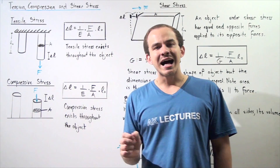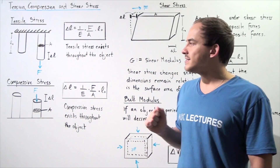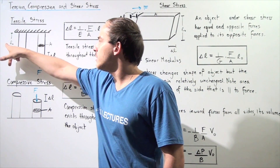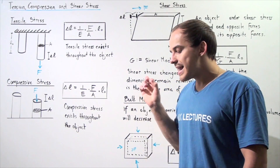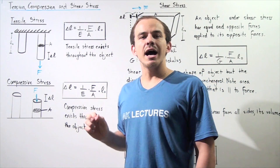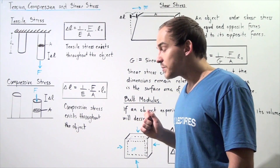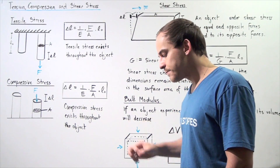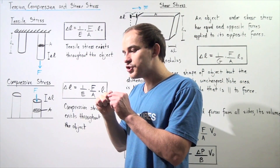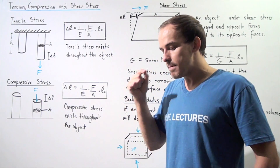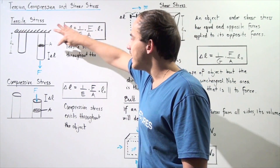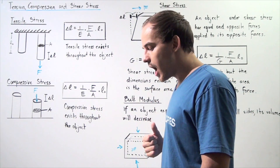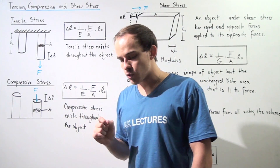Let's suppose we have a certain column that is hanging from the ceiling as shown, and the length of the column is given by the variable L-naught, which is given in meters. Now let's suppose we apply a force onto our column, and the force points in the following direction given with the blue capital F. The change in our object's displacement — the amount our object stretches — is given by change in L. This is known as the elongation of our object when the force is applied.